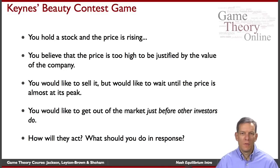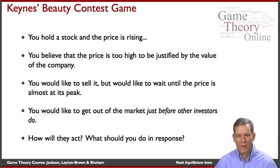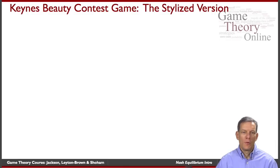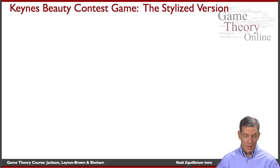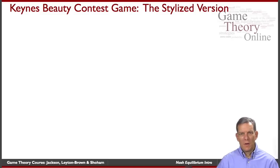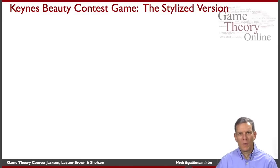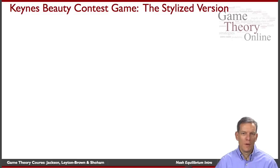You'd like to sell it, but you'd like to wait until the price is at its peak — to get out of the market just before the other investors do. This is a game where you have to predict what other people think about the stock price. The basic ingredients of Nash Equilibrium are going to be having some prediction of what other players are doing and then choosing the optimal strategy in response to that. Keynes described a newspaper in England that had a contest where players had to guess which picture of several women other readers would think was most attractive.